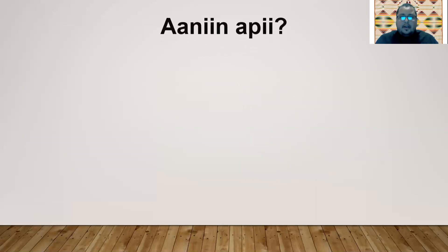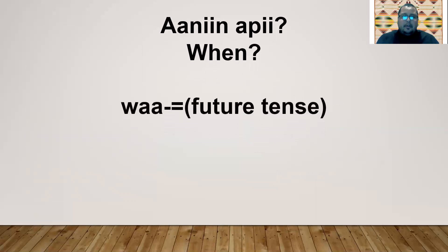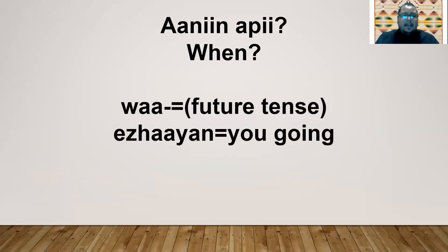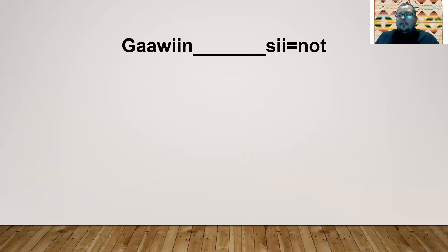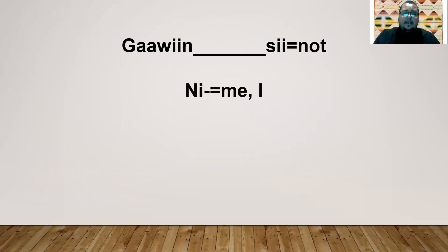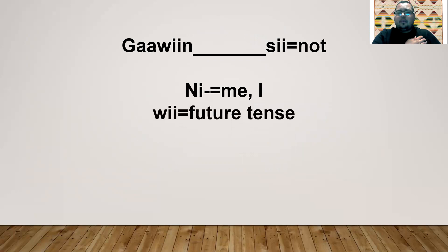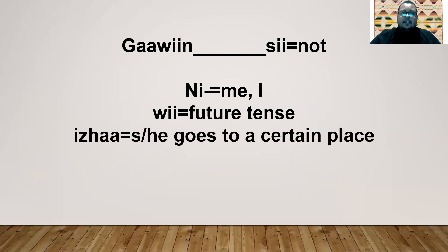So let's get started. 'Aaniin apii wa' — future tense — 'ezhaayan,' you going, and then you insert your location — that is your question. We're going to see examples of that negated form: 'gawin' plus your verb followed by 'si.' 'Ni' is me or I; 'wi' is future tense — I will, or want to, or going to; 'ijaa' — she or he goes to a certain place.